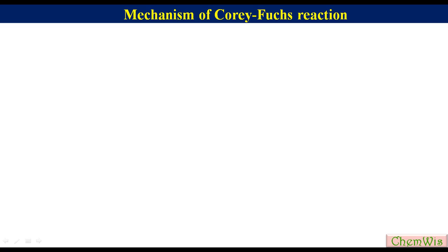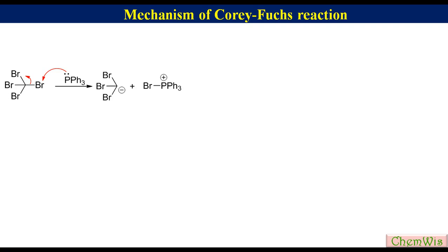Mechanism of the Corey-Fuchs reaction: triphenylphosphine attacks on bromine of tetrabromomethane to generate bromotriphenylphosphonium cation and tribromomethyl anion. The tribromomethyl anion attacks on the phosphorus atom of bromotriphenylphosphonium ion to produce tribromomethyl triphenylphosphonium bromide.